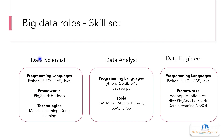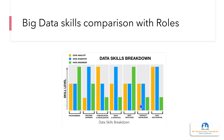A data scientist needs programming language knowledge, as well as frameworks and technologies. Most of the work involves machine learning and deep learning. New models are built — for example, recommendation engines, forecasting, and similar applications. This slide details the comparison of data analyst, data scientist, and data engineer across skills like programming, machine learning, communication, mathematics, statistics, best practices, product knowledge, and data exploration.